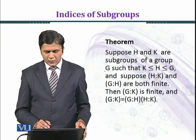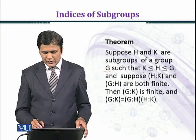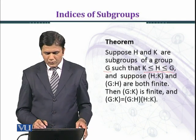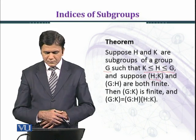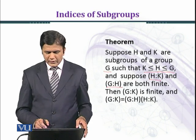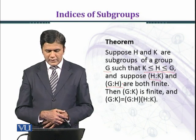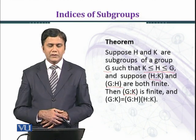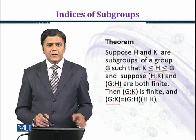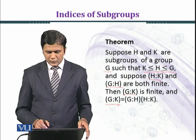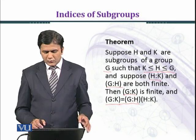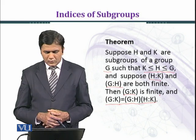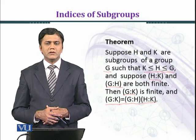Now state an important result: suppose H and K are subgroups of a group G such that K is a subgroup of H, and H is a subgroup of G. Suppose the index of K in H and the index of H in G are both finite. Then the index of K in G is finite and is given by: index of K in G equals index of H in G times index of K in H.